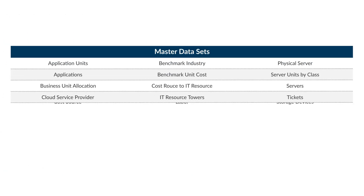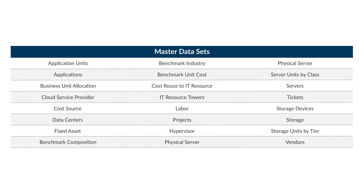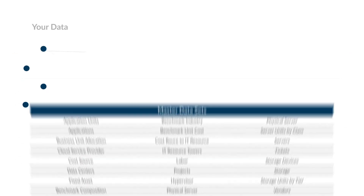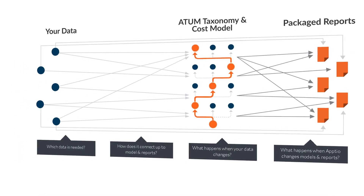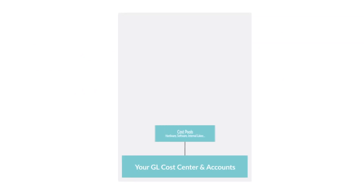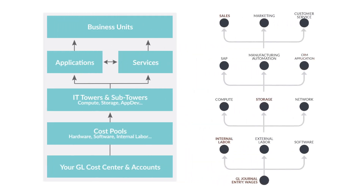Second is data specifications — the list of required and optional data sets and definitions required to construct the IT business model. Third, we have key drivers and allocations, which focuses on understanding primary cost drivers and various strategies for allocating these costs throughout the model.